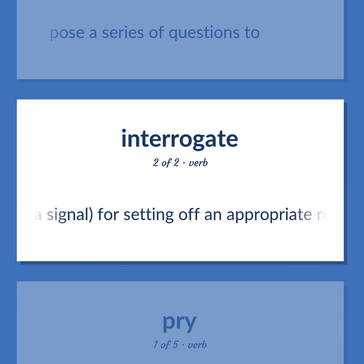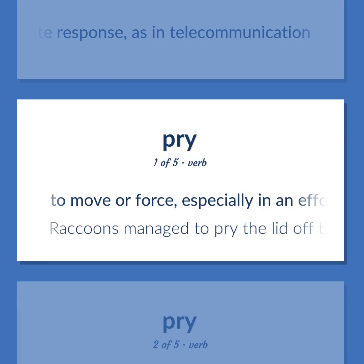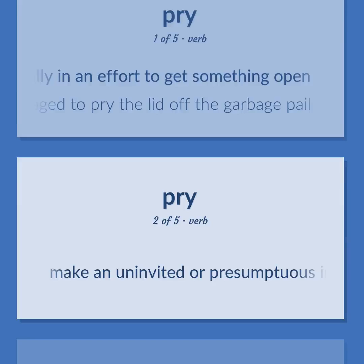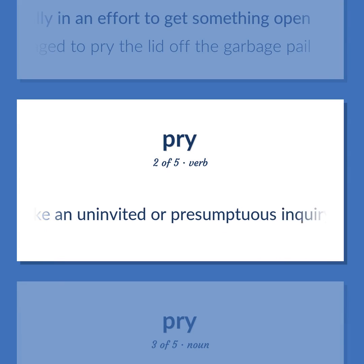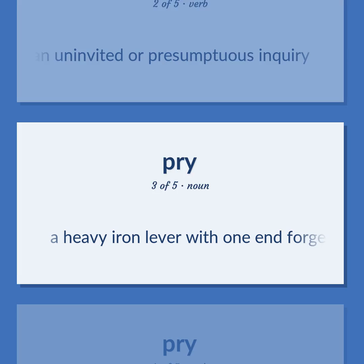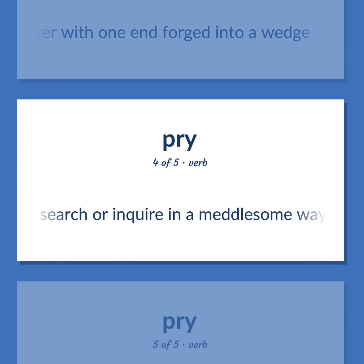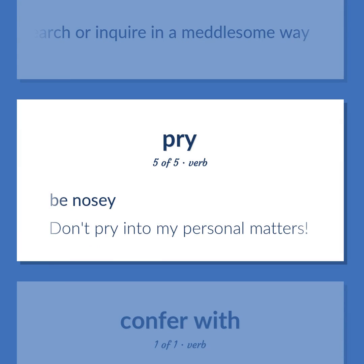Signal: to transmit a signal for setting off an appropriate response, as in telecommunication. Pry: to move or force, especially in an effort to get something open. Example: Raccoons managed to pry the lid off the garbage pail. To make an uninvited or presumptuous inquiry. A heavy iron lever with one end forged into a wedge. To search or inquire in a meddlesome way; be nosy. Example: Don't pry into my personal matters.